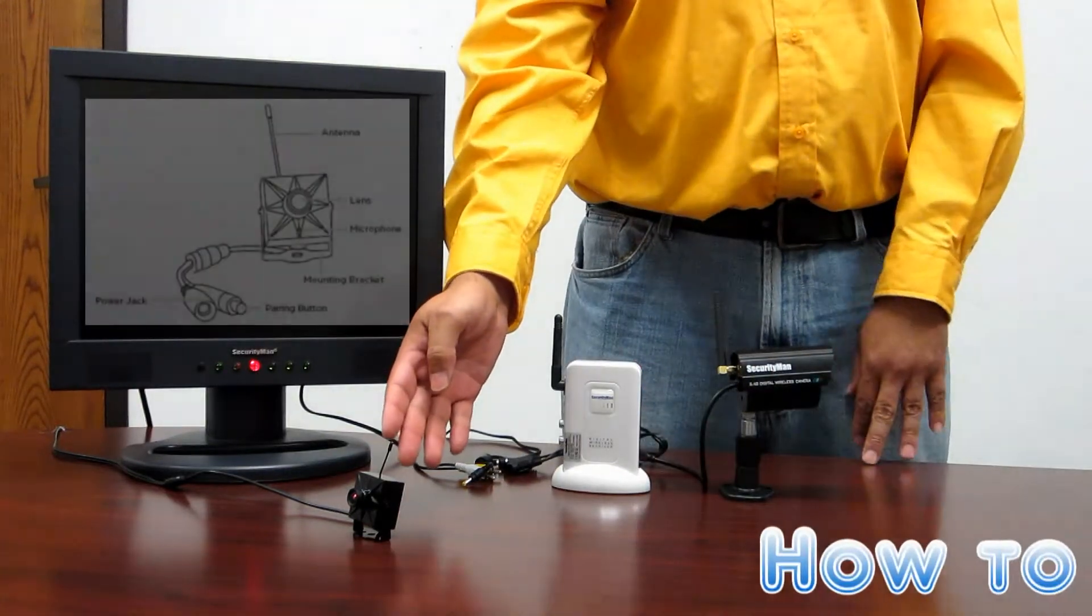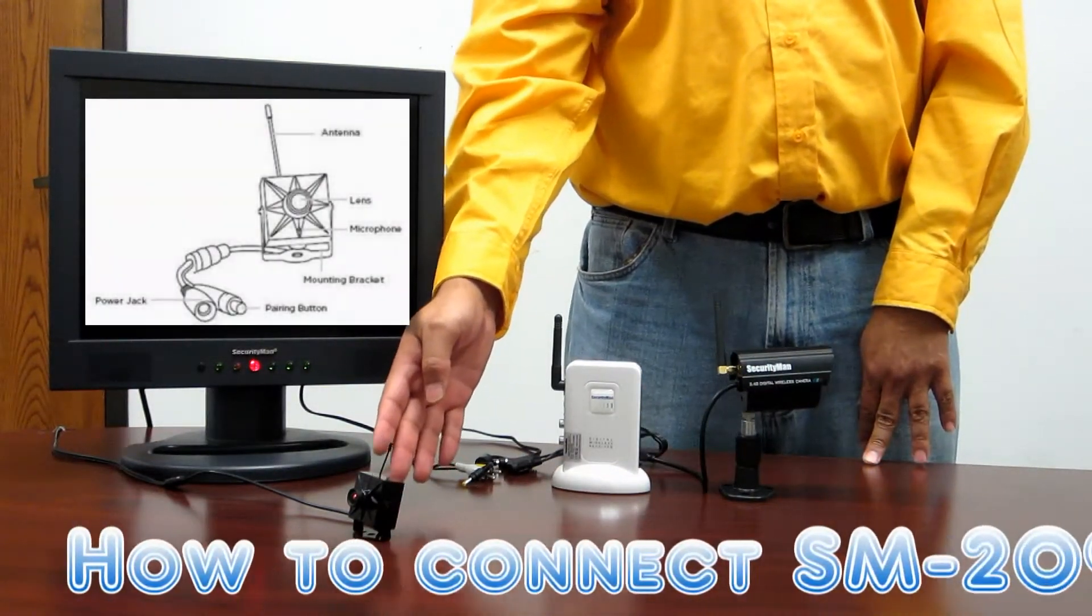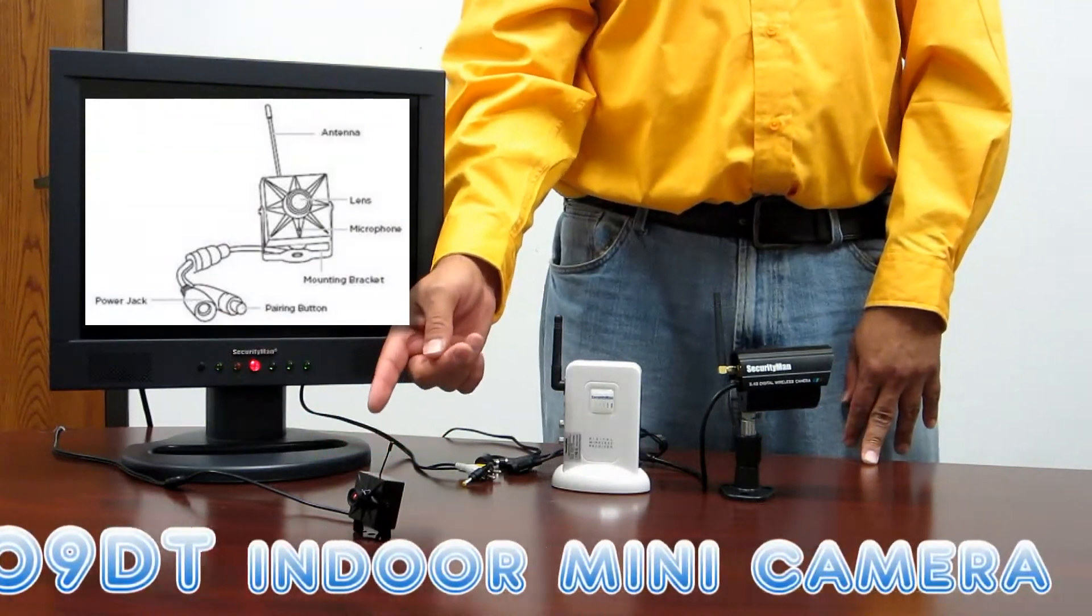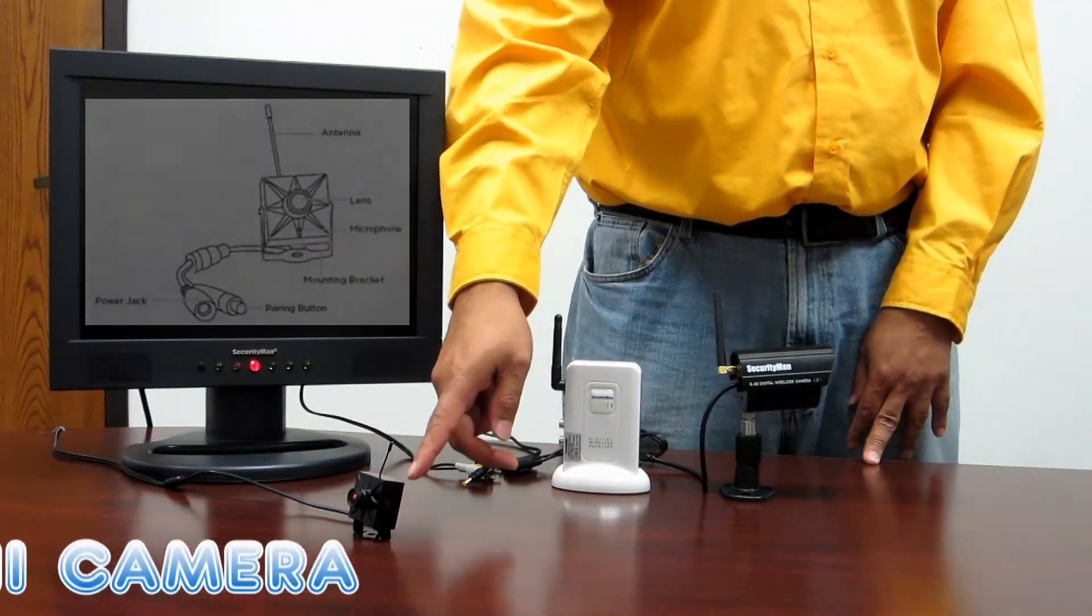The DIGI MiniAir is similar, however at the end of its cable there's only a power socket and a pairing button. The microphone is actually built into the camera.